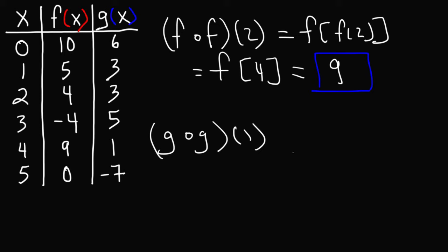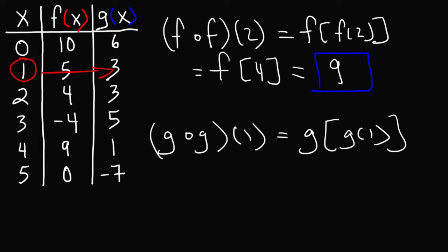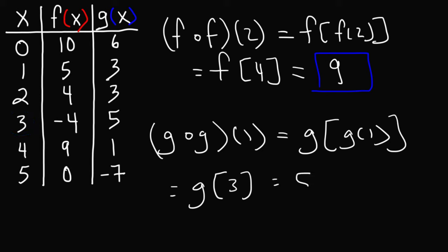Moving to the next example, we have g of g of 1. When x is 1, g is equal to 3, so now we have g of 3. When x is 3, we can see g is equal to 5. So g of g of 1 — the final answer is 5.